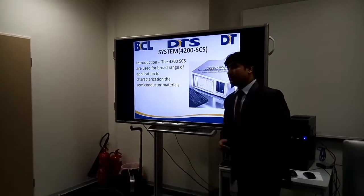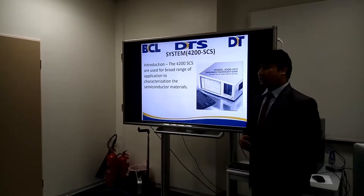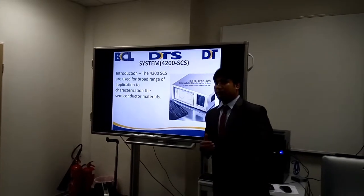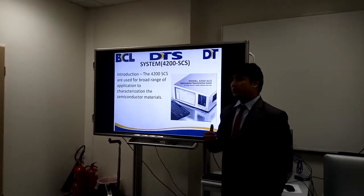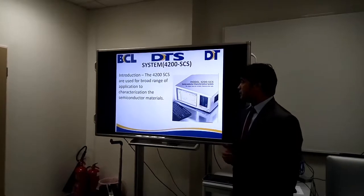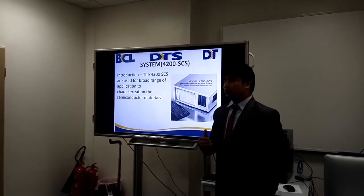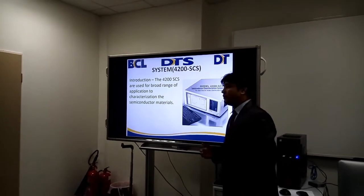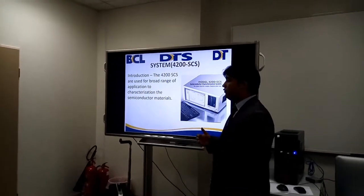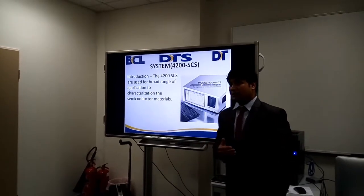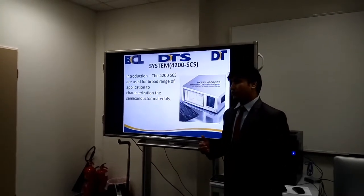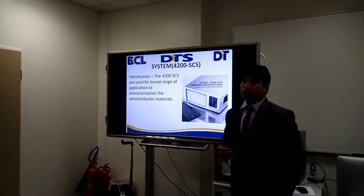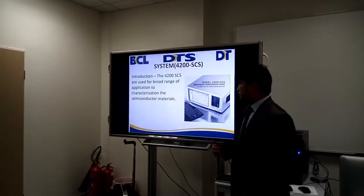This 4200 is called SCS — SCS means semiconductor characterization system. This equipment has a broad range of applications and is capable of doing any kind of application related to the semiconductor. Generally we can use it to characterize resistance, BJT, MOSFET, and different kinds of applications. In electrical characterization, it is based on the 2-probe and 4-probe. In the next slide, we will discuss the advantages and disadvantages of using the 2-probe and 4-probe method in our applications.